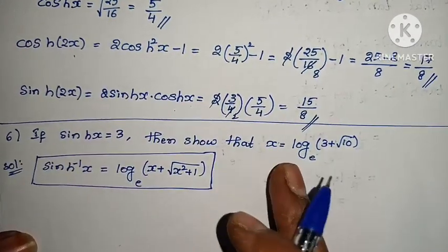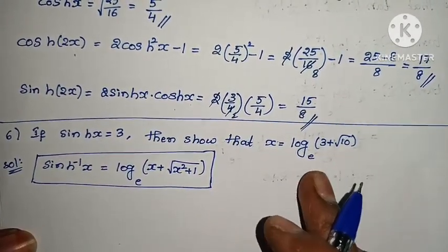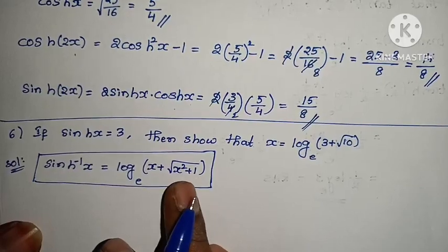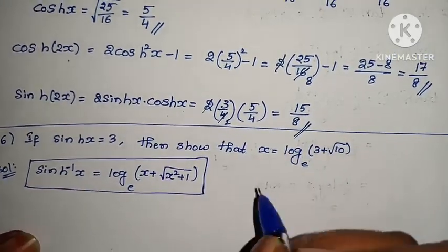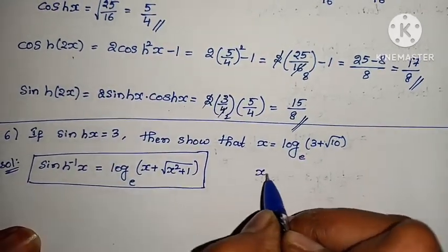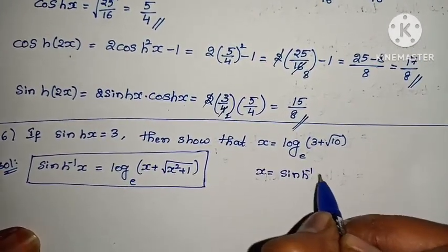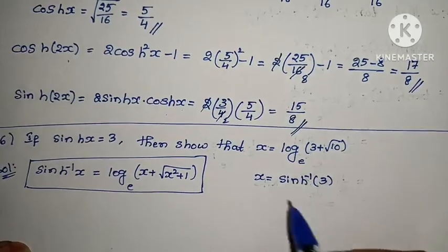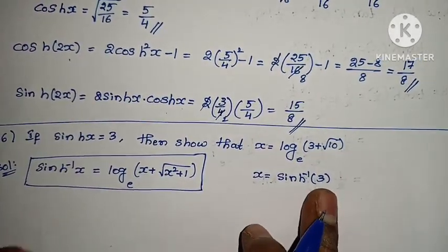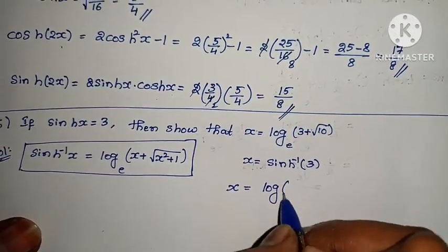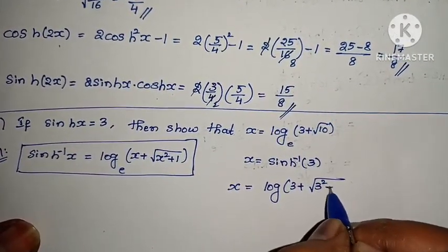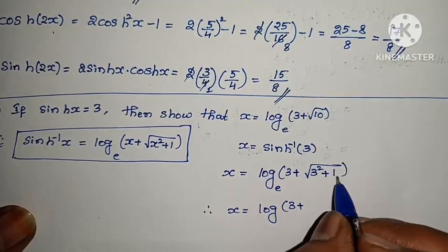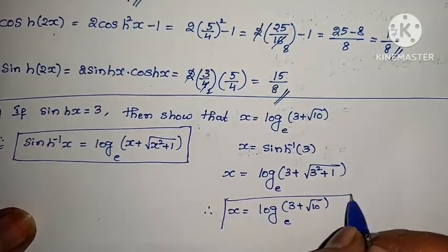If sinh(x) = 3, then show that x = log(3 + √10). Using the formula: sinh⁻¹(x) = log(x + √(x² + 1)). Since sinh(x) = 3, then x = sinh⁻¹(3) = log(3 + √(3² + 1)) = log(3 + √(9 + 1)) = log(3 + √10). Problem complete.